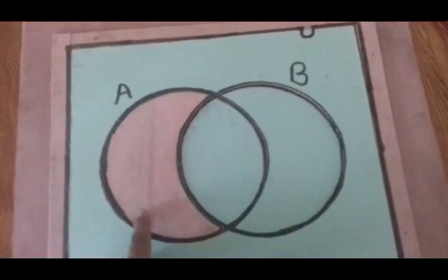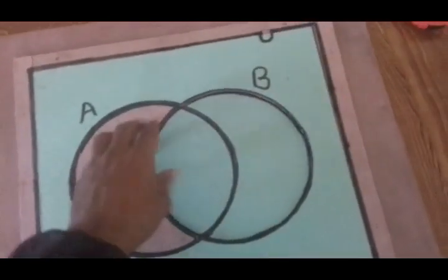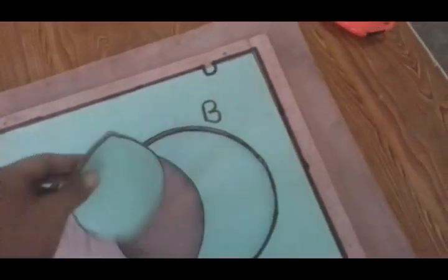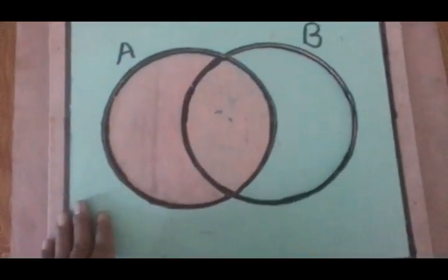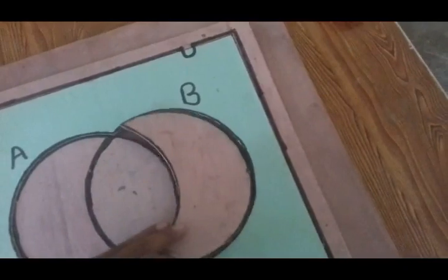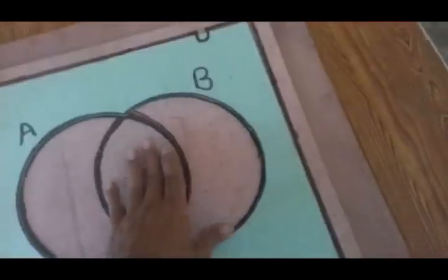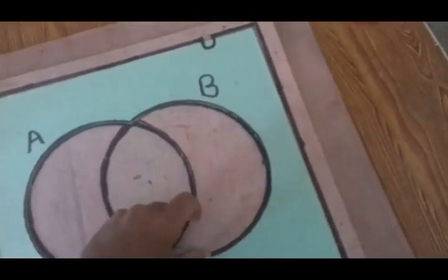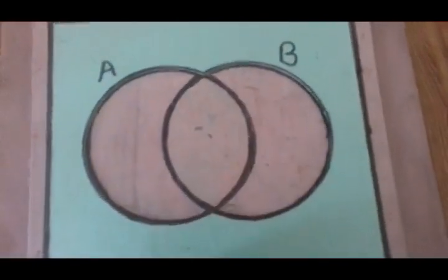A minus B complement. This is B complement. This is A union B complement.